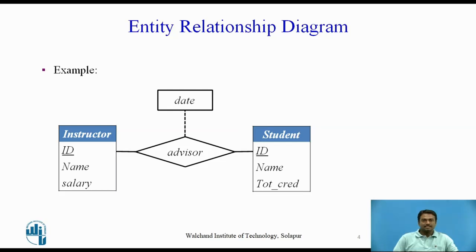Consider the entity relationship diagram in the given figure, which consists of two entity sets, instructor and student, related through a binary relationship set advisor. The attributes associated with instructor are ID, name, and salary. The attributes associated with student are ID, name, and total credit.